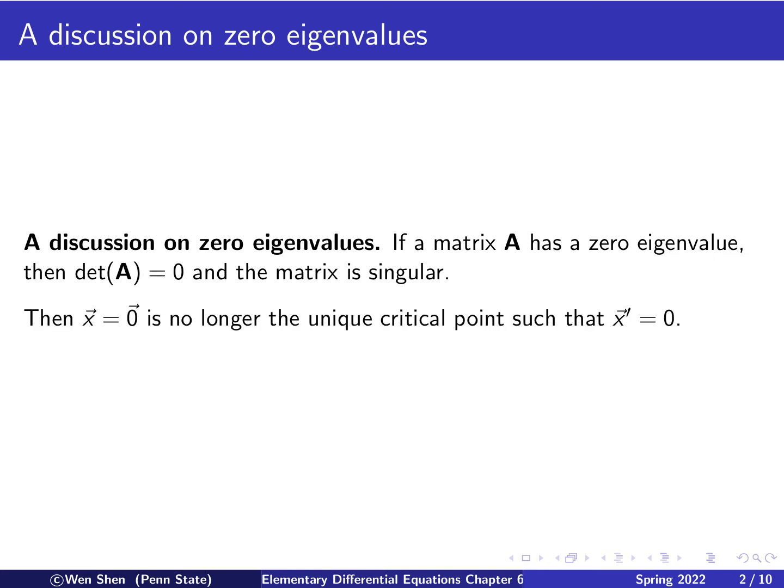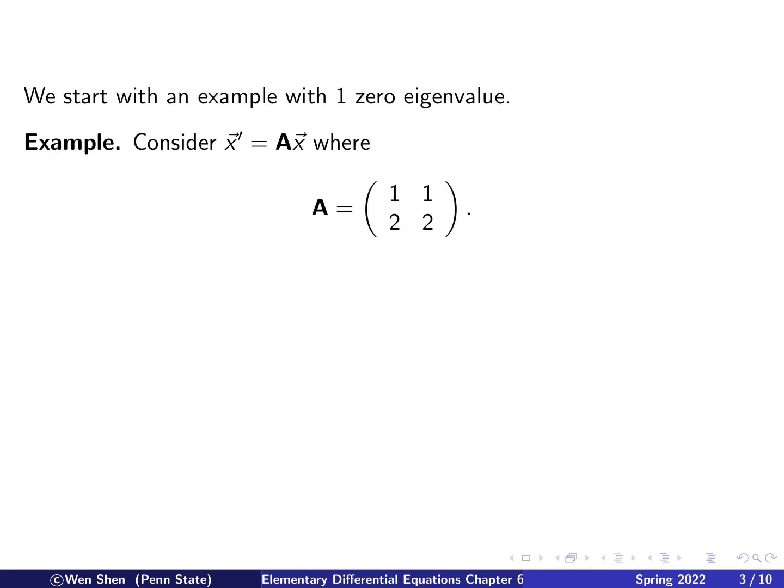If A shall have one eigenvalue, or at least one eigenvalue of zero, then we know the determinant of A is zero. And that means the A matrix is singular and it's not invertible. And if that is the case, this is very different from all the cases we have discussed so far. Remember, all the cases we have discussed, we say that the origin X equals zero vector is the only unique critical point for the system. But here, that will no longer be the case. This will still be a critical point, but there will be more than that.